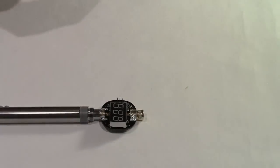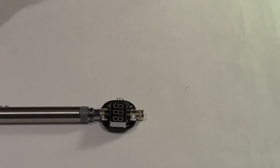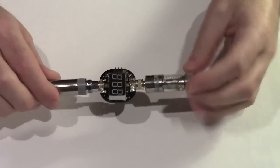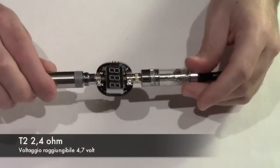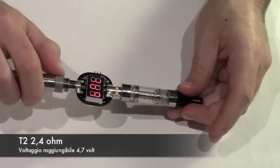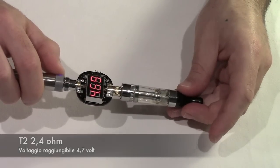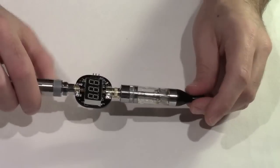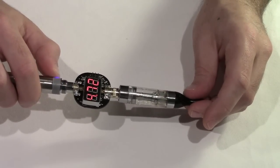Proviamo con un carton da 2.4 ohm. Io ce l'ho sempre impostato a 5 volt la batteria. Guardiamo con un carton, ecco infatti va a 4.7. Infatti questo è 2.4 ohm come potete vedere, riesce a spingere di più.